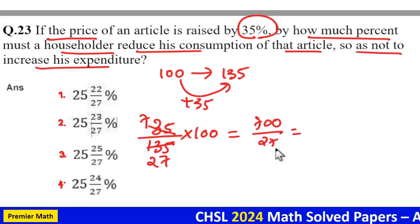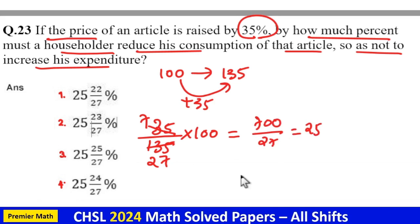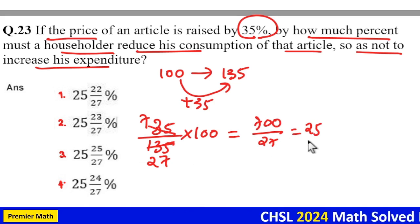Now, if you look at the option, this is equal to 27 goes 25 times in 700. So, remaining is 25 into 27 is equal to 7 into 5, 35.